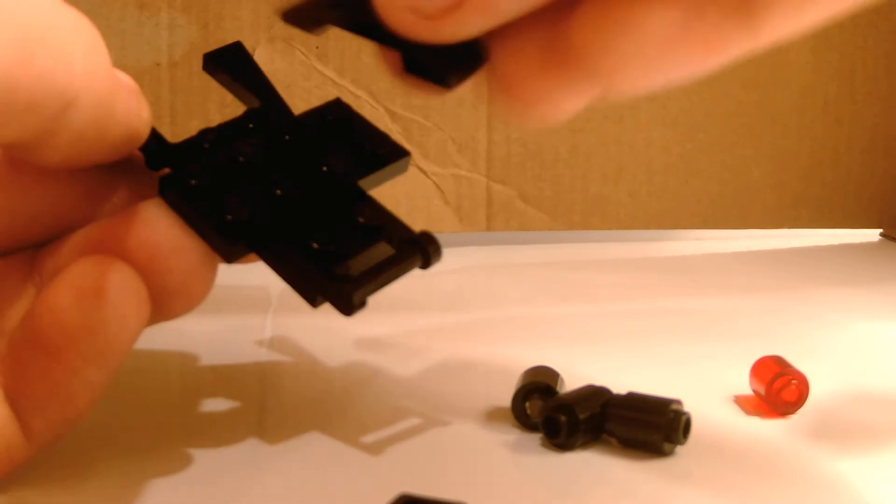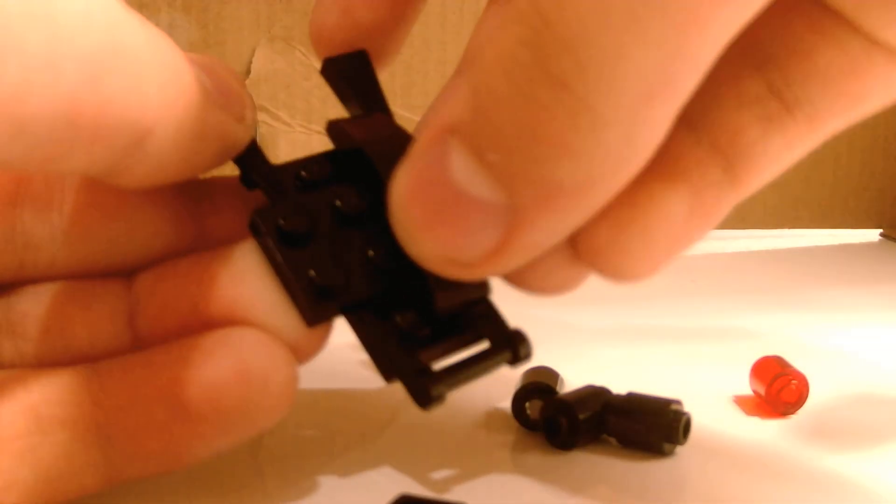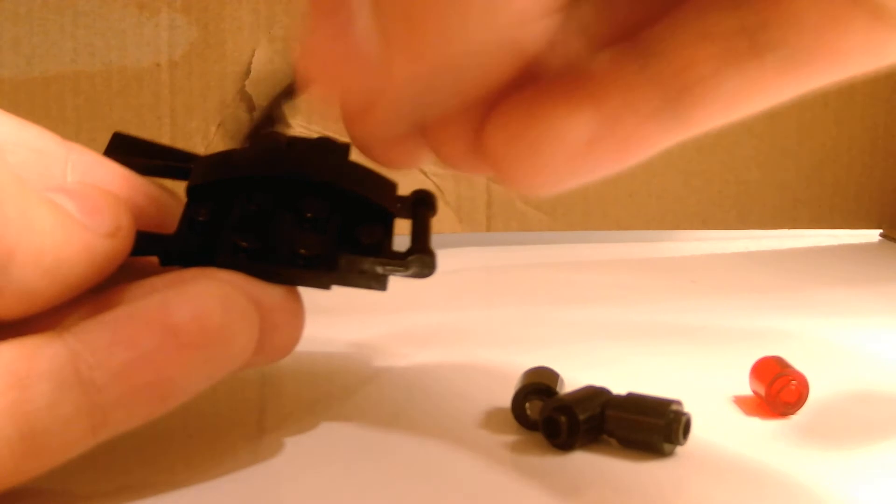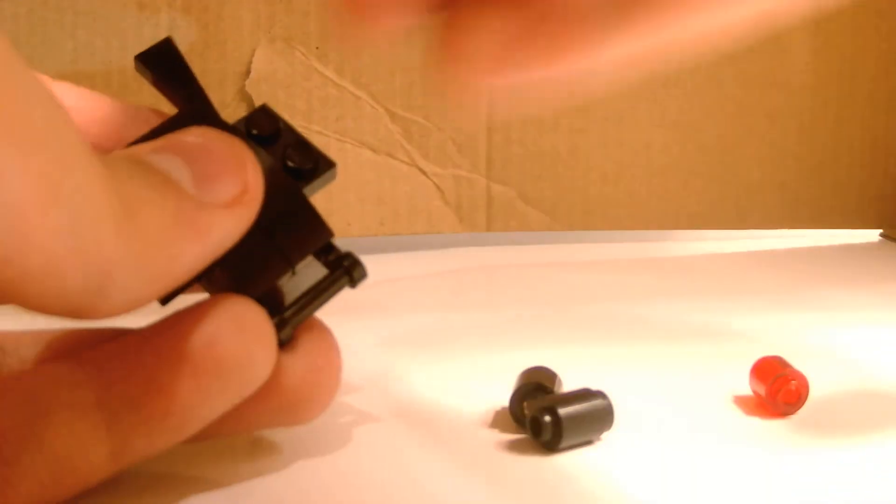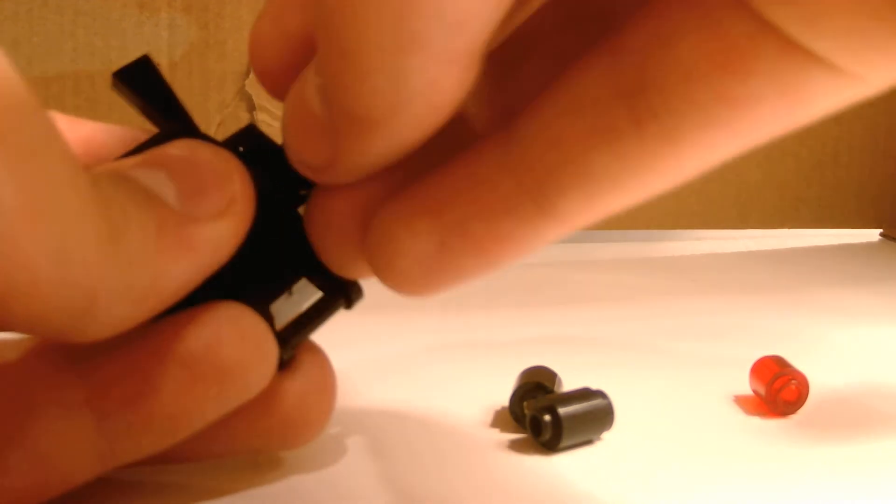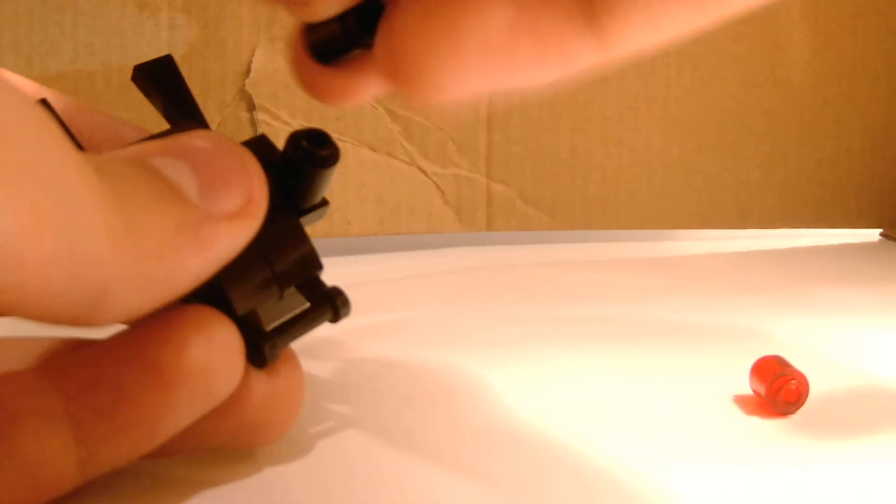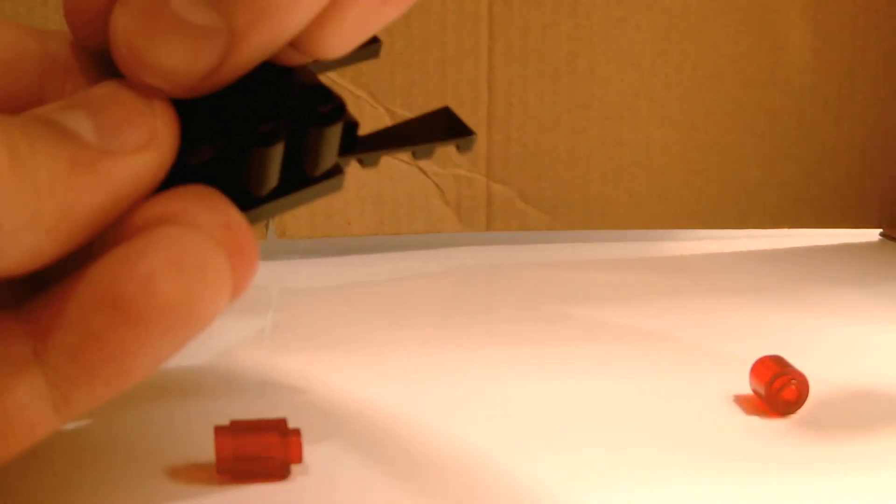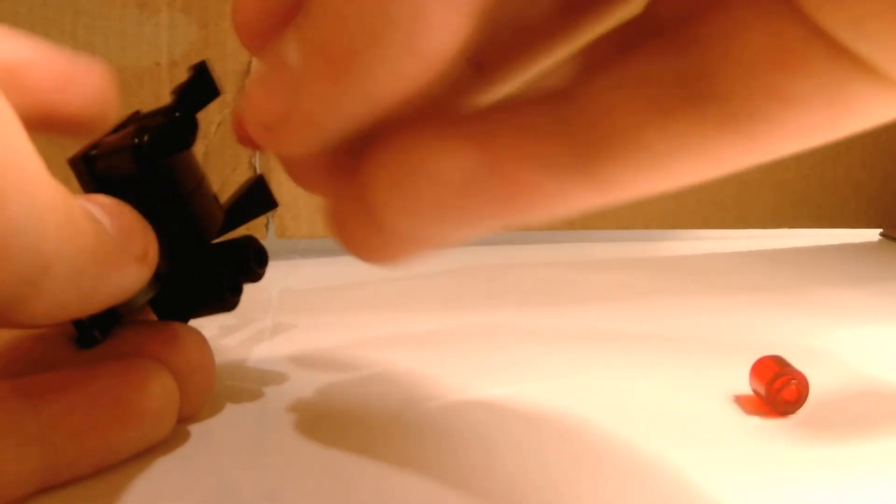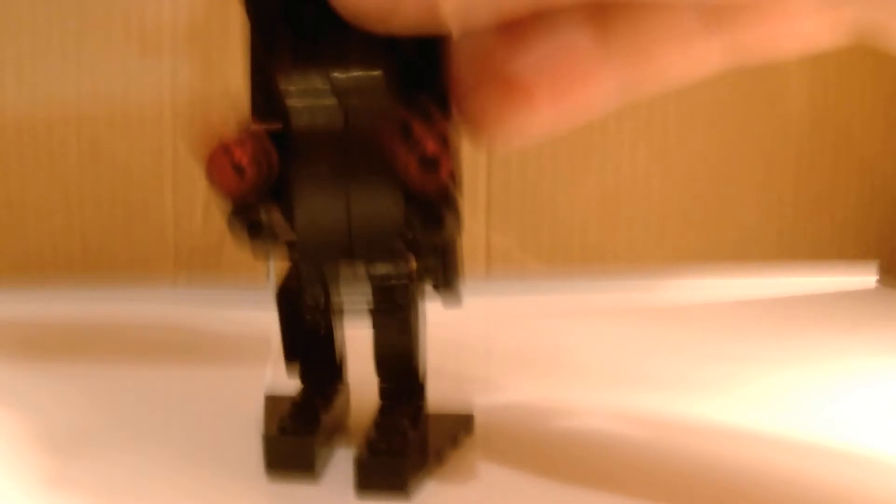Then you're going to want to take these bumper pieces and stick them together. And yeah, boom. Then you want to take all these round one by ones and you want to place them on the side pieces, all four of them. And then you want to take these trans red and you want to stick them either on the top or bottom too.